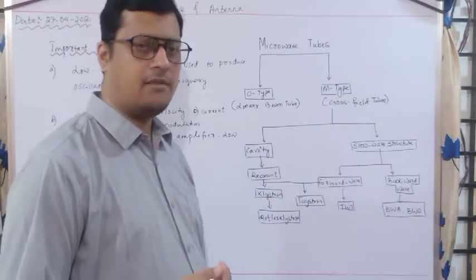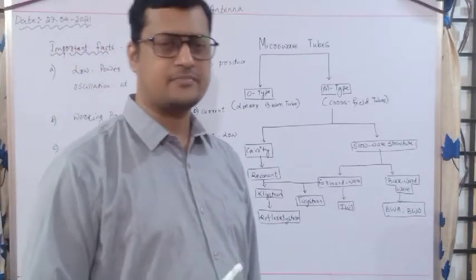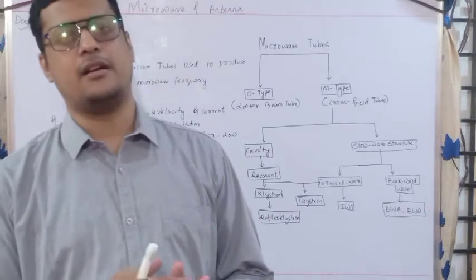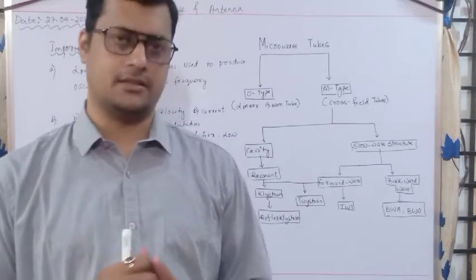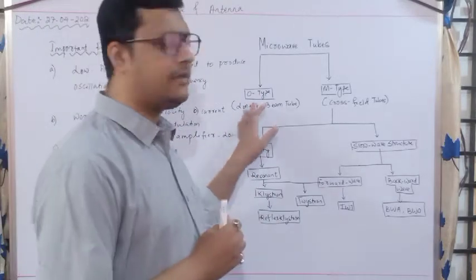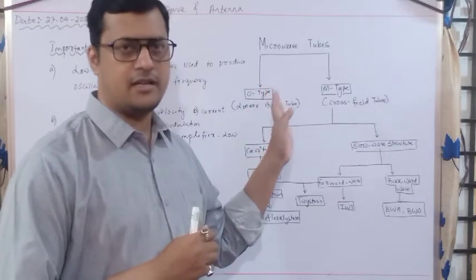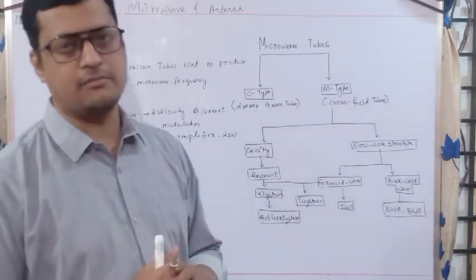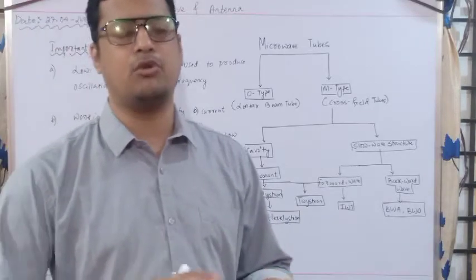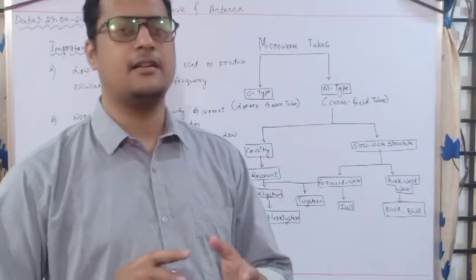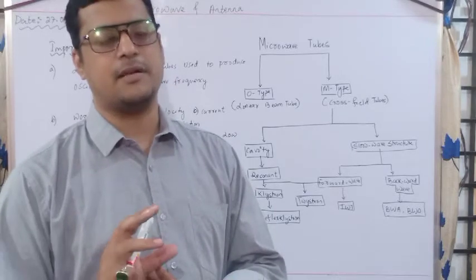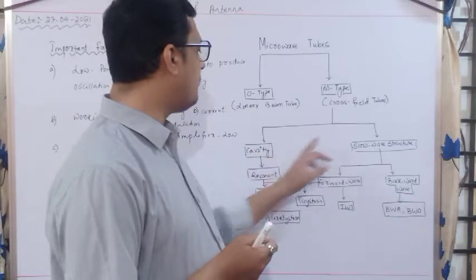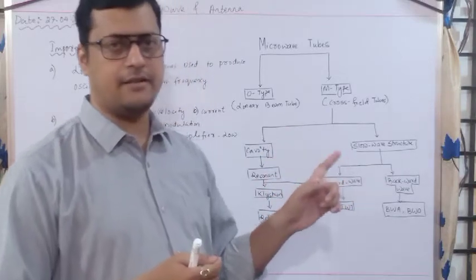M-type tube is also called a cross-field tube. Cross-field means both electric field and magnetic field are available. In the cross-field tube, the electric field and magnetic field both vary with respect to time and the characteristics change with respect to the mediums. M-type tubes are of two types: one is cavity and one is slow wave structure.